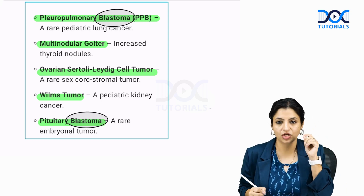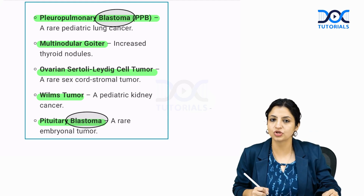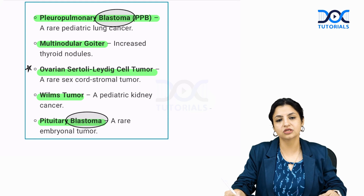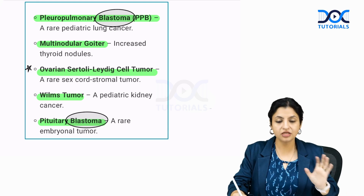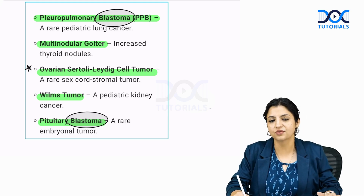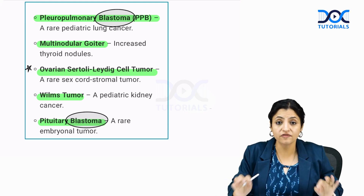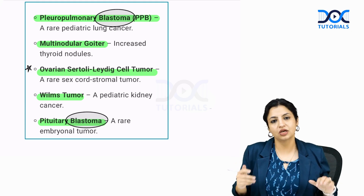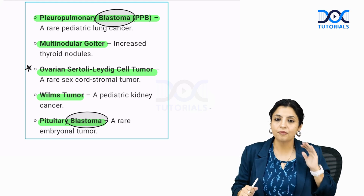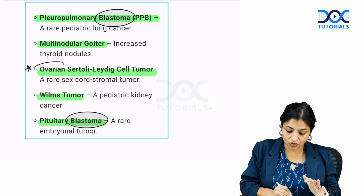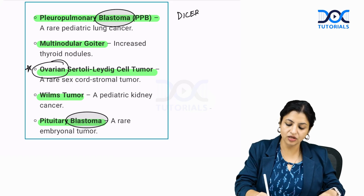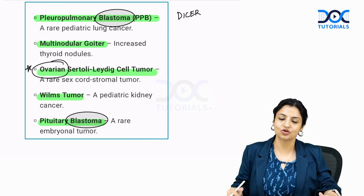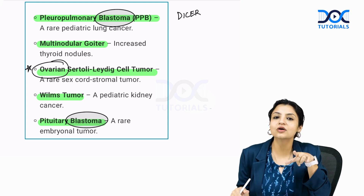DICER mutations are commonly seen in pleuropulmonary blastoma and pituitary blastoma, which are pediatric tumors. A very classic and frequently examined association is ovarian Sertoli-Leydig cell tumors with DICER mutations. Also remember Wilms tumor and multinodular goiter. A mnemonic: DICER dices vegetables in the house — so think ovary, females.